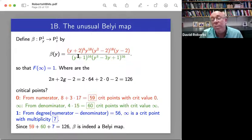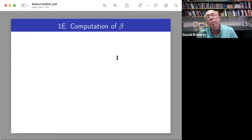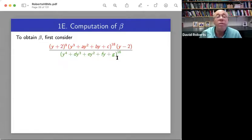I wrote down what this Belyi map is. But how could you get this Belyi map by standard Belyi map computational techniques? So that's what I'm going to go through now. Computation of beta. So to obtain beta, you can first consider something of its general shape.